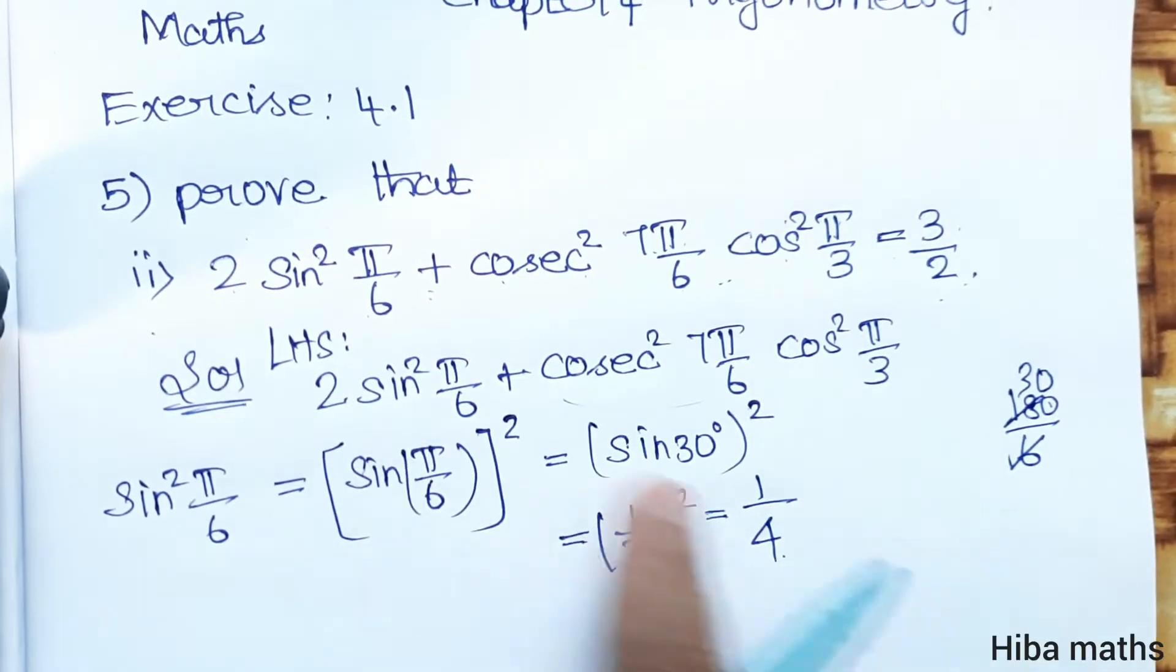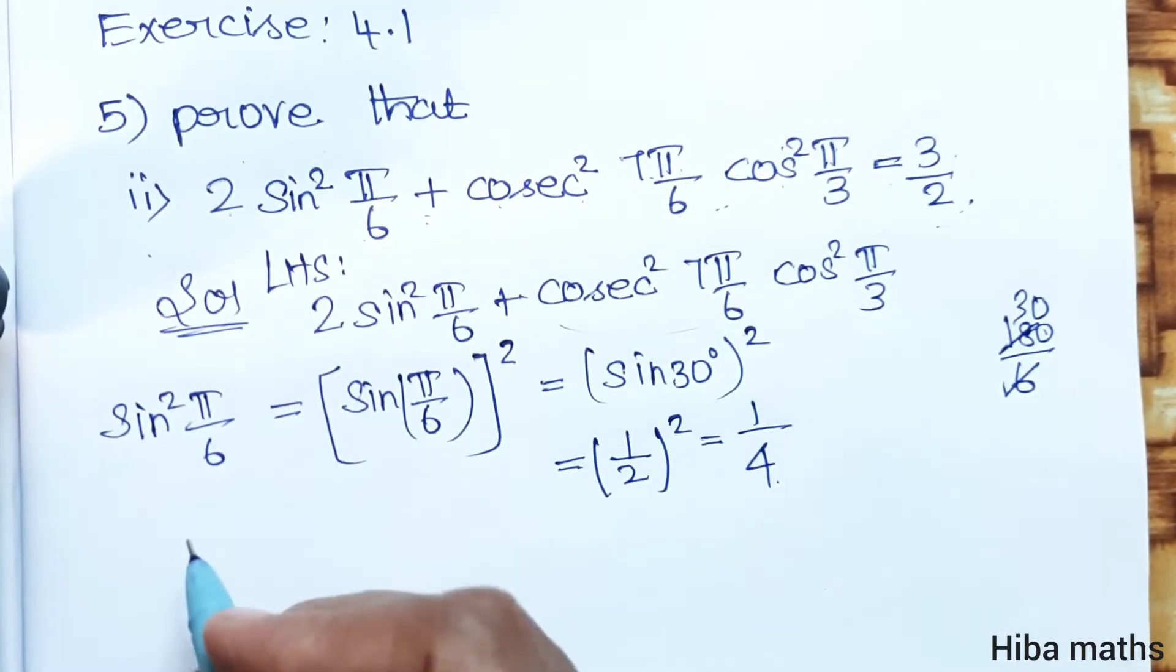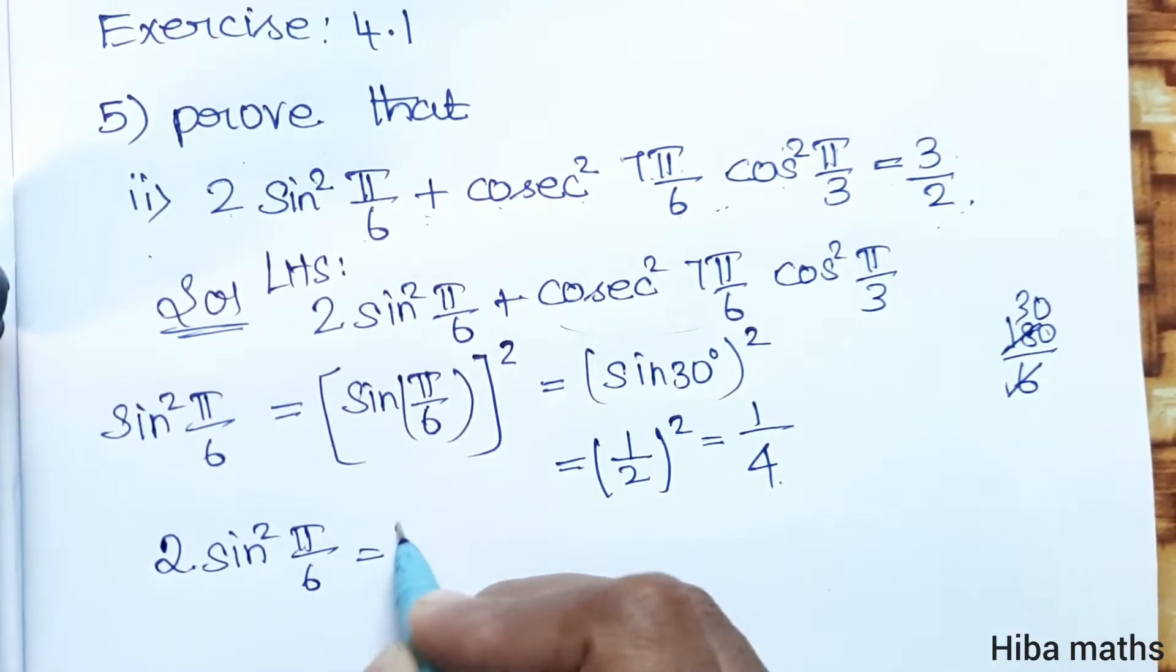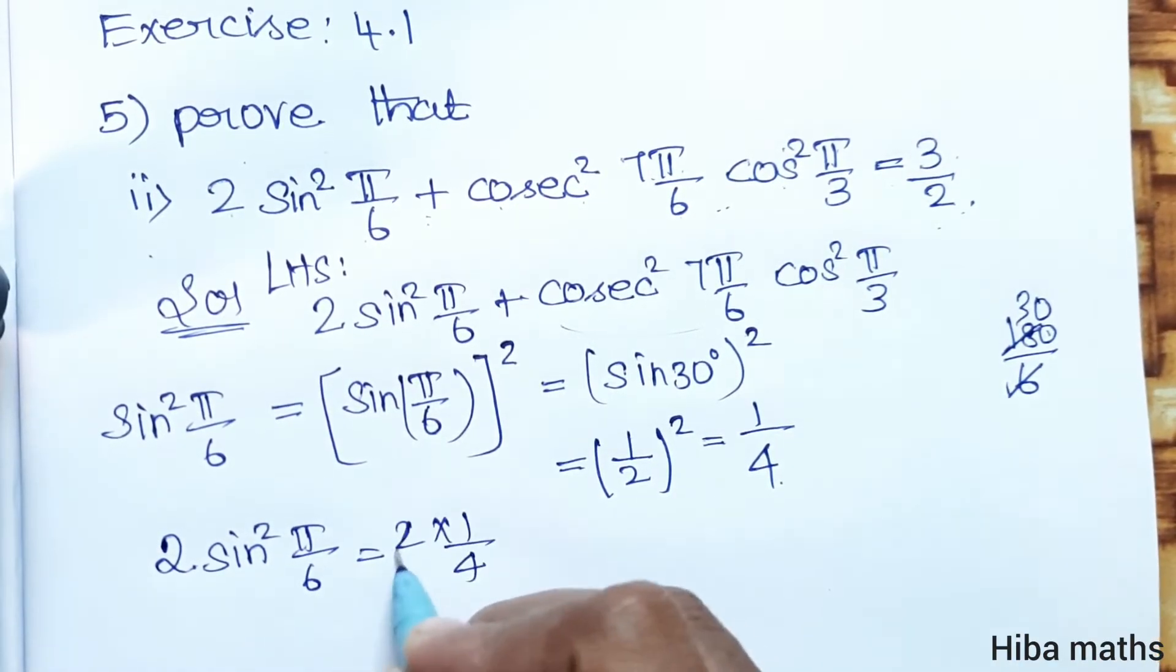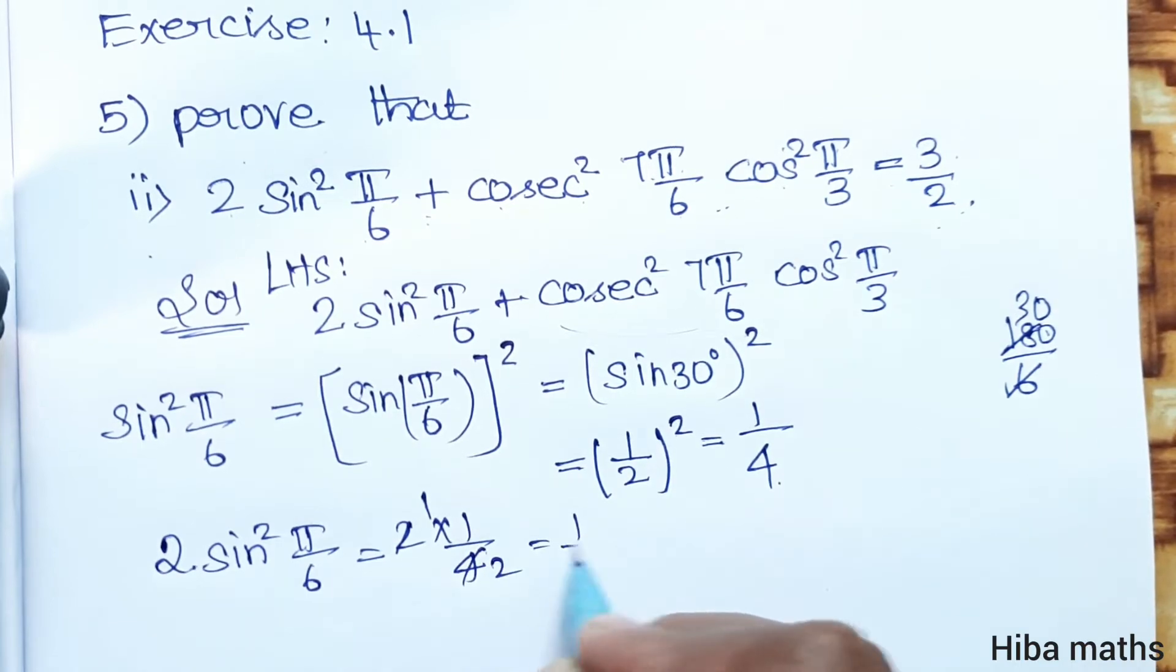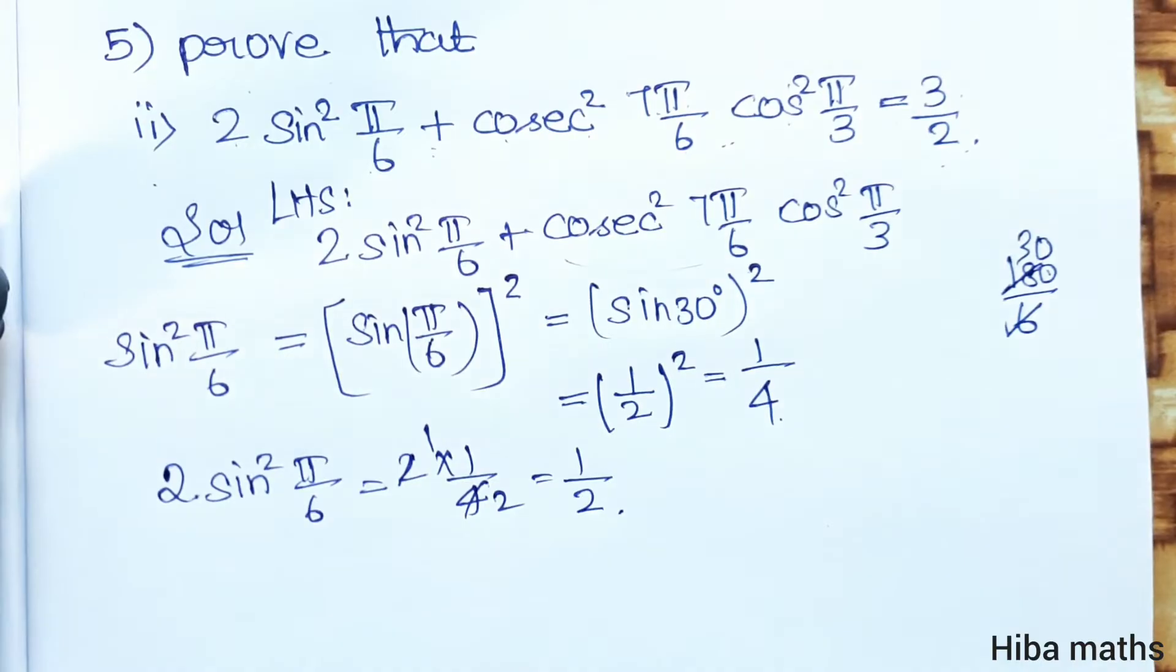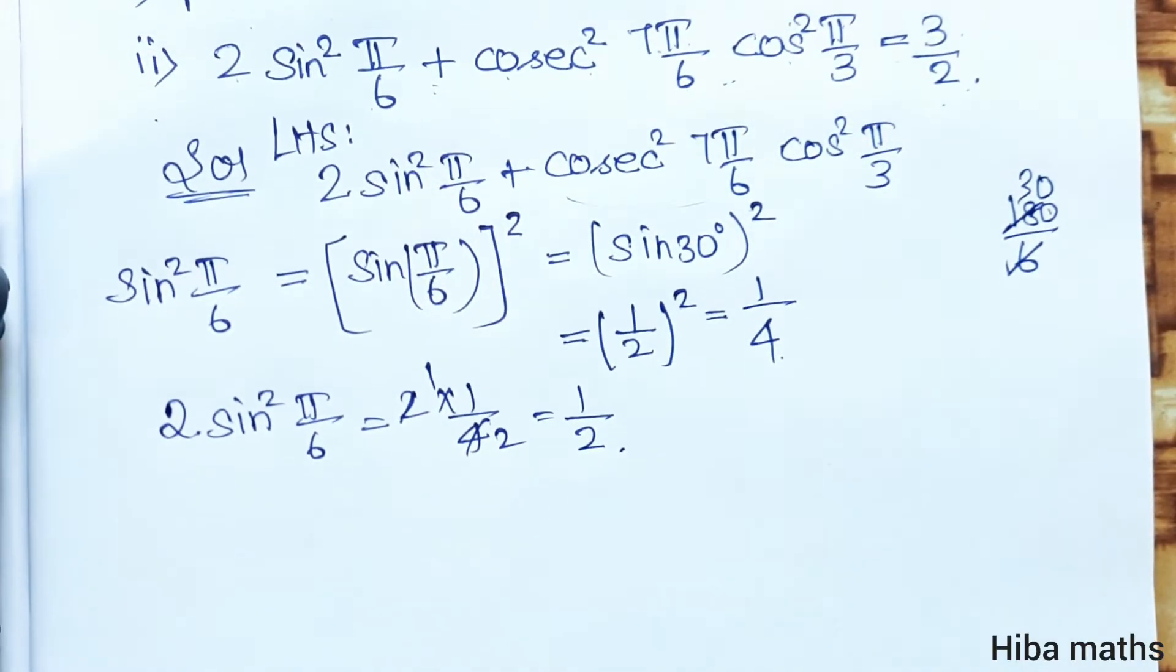This is the first term value. So we have 2 × sin²(π/6) = 2 × 1/4. 2 times 1/4 equals 1/2. The first term equals 1/2.